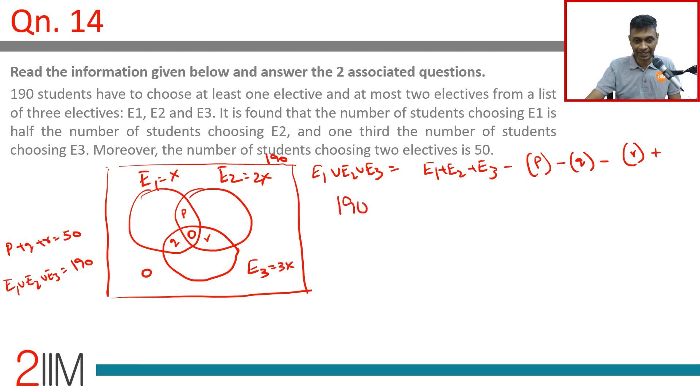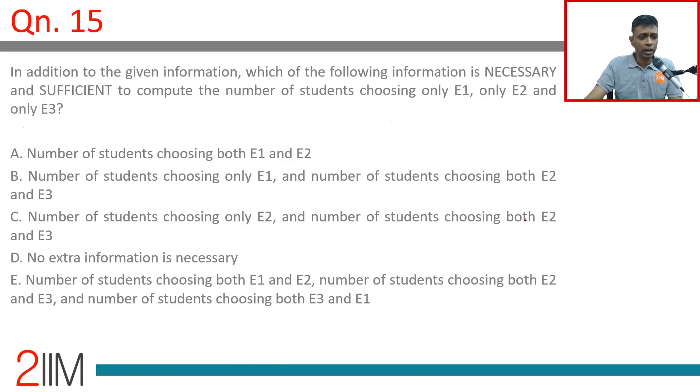So this is 190 equals x plus 2x plus 3x minus p plus q plus r. This is 6x. 190 equals 6x minus 50, so 6x is 240, x is 40. So 40 take E1, 80 take E2, 120 take E3. P plus q plus r is 50, center intersection is 0, outside is 0.